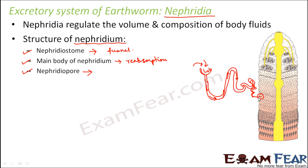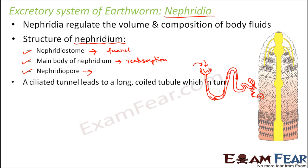The functioning of nephridia is analogous to the human kidney — even in human beings, the kidney and other excretory organs together perform a similar sort of function, which we will discuss when we cover the human excretory system. A ciliated funnel leads to a long coiled tube, which in turn leads to a bladder that temporarily stores the fluid, and from this bladder it is discharged through the small pore.